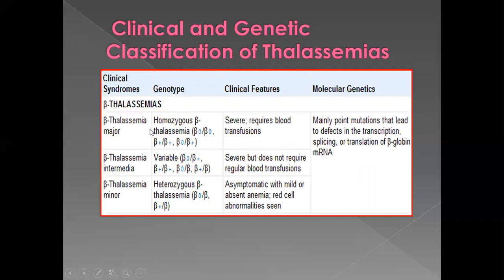Beta thalassemia intermediate is not as severe as major, but not as mild as minor — it is in between. The genotypes include beta-zero/beta-plus, or beta-plus/beta-plus, or beta-zero/beta. In these genotypes, beta-zero means no beta chains, beta-plus means reduced beta chains, and beta means normal beta chain production. This form is severe but does not require regular blood transfusions, unlike beta thalassemia major which requires transfusions from an early age. Beta thalassemia minor is heterozygous — beta-zero/beta or beta-plus/beta — one gene totally not producing beta chains, the other normal or producing reduced amounts. This form is asymptomatic with mild or absent anemia and red cell abnormalities such as microcytosis and hypochromia.